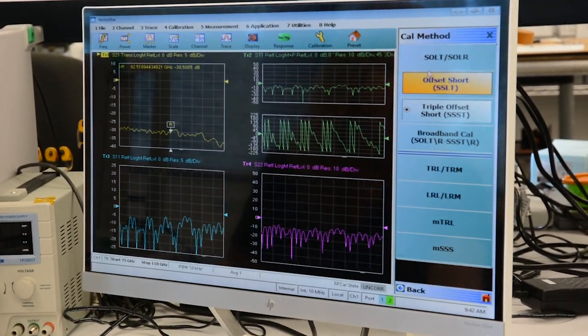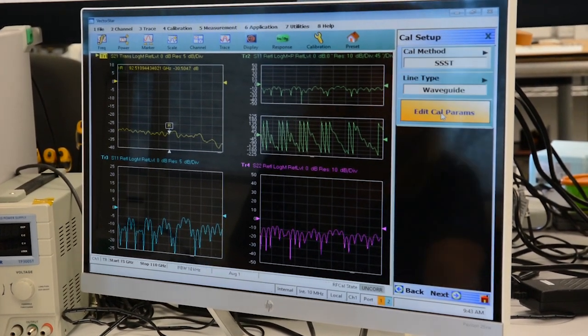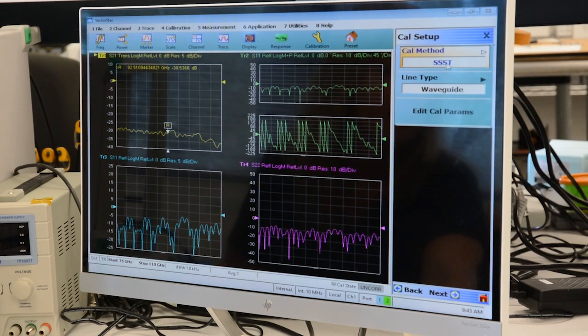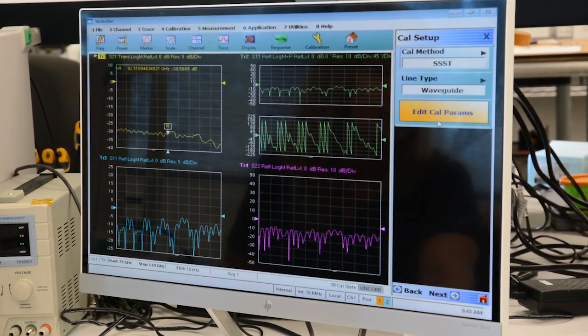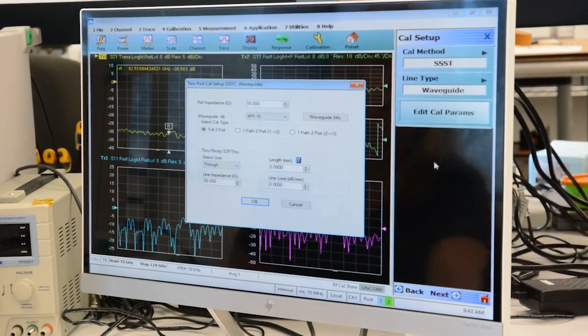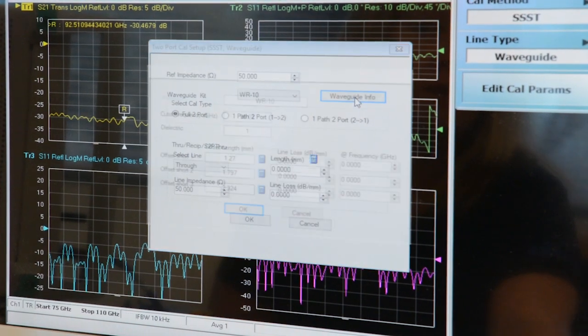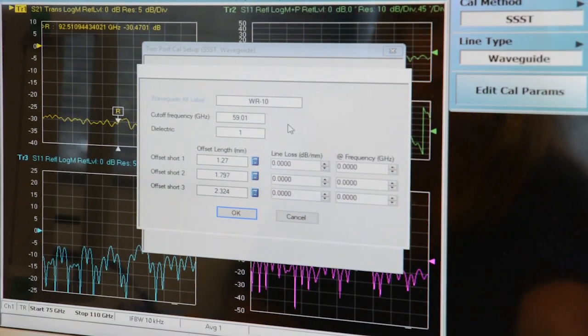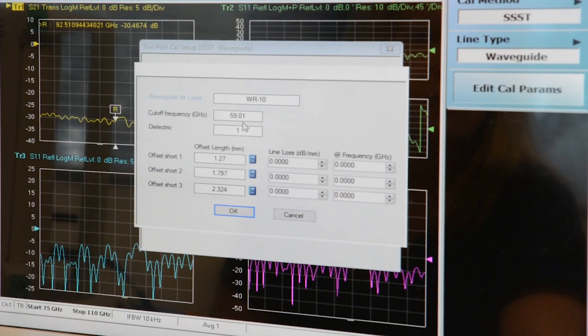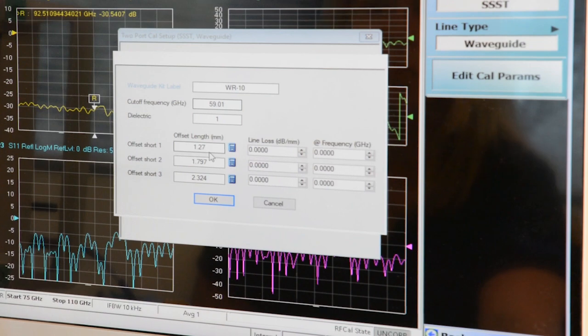Here we have our cal methods. With this we use a triple offset short, so you should see SSST in this block. It is waveguide. We go to edit cal parameters. As you can see we have WR10 and this is where we put in our waveguide information. Our cutoff frequency is put in here, and this is 59.01.